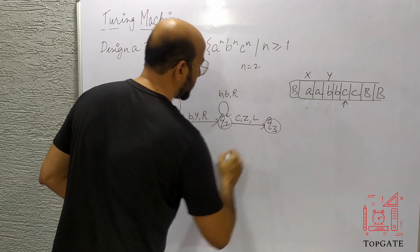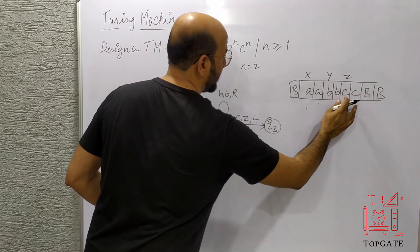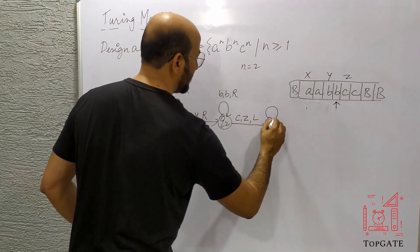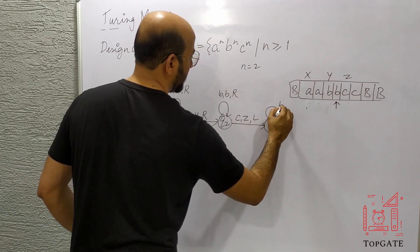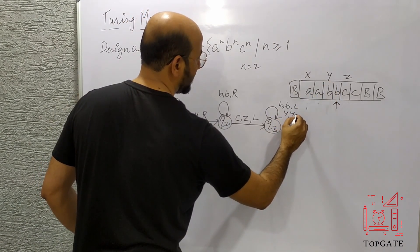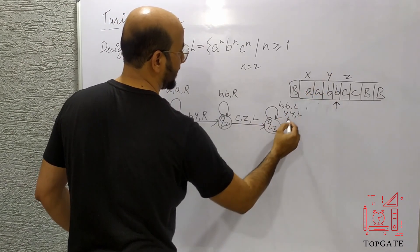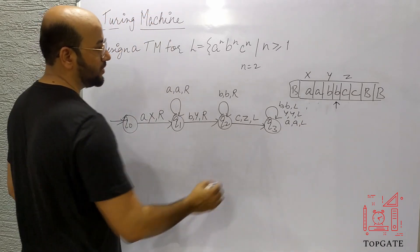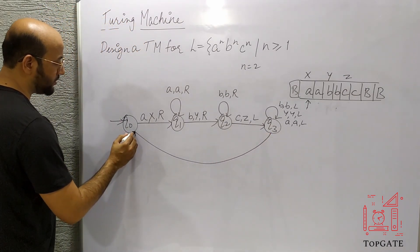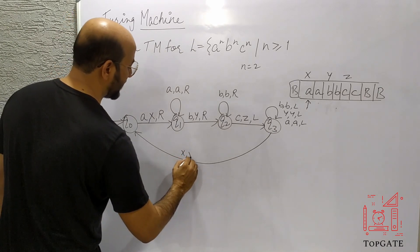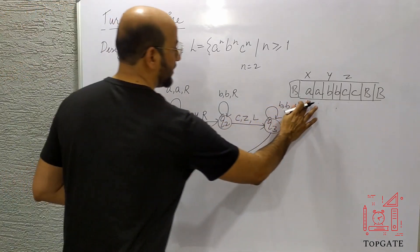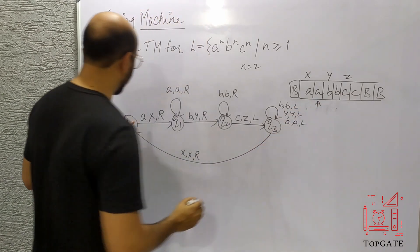At state Q3, C has been changed to Z and the pointer is on this B. Everything in the way I leave as it is: B stays B going left, Y stays Y going left, A stays A going left. The pointer reaches X, and with X I come back to initial state Q0 taking a right turn. One cycle is complete, and the pointer now points to the next A.